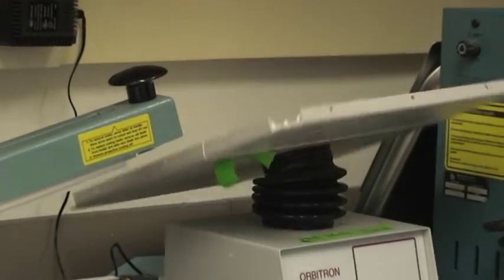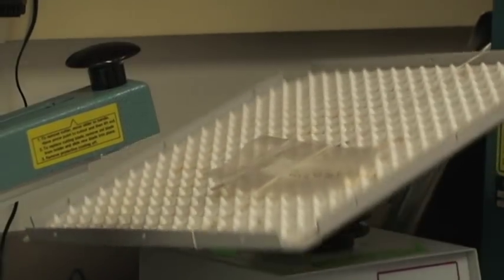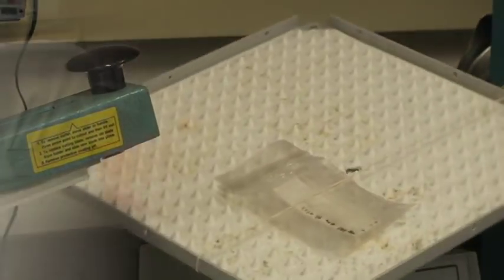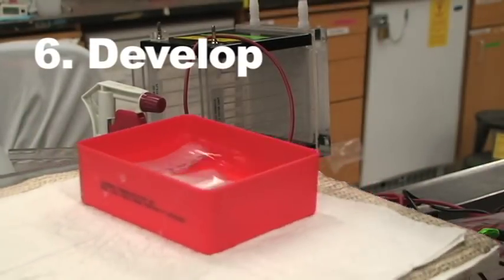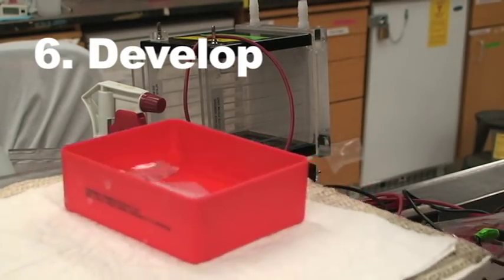Now the blot that's incubating with the primary antibody is left on a shaker overnight. The next day, this antibody will be washed, and the process repeated with the secondary antibody. These guys were in secondary, but now they're in PBS washing.